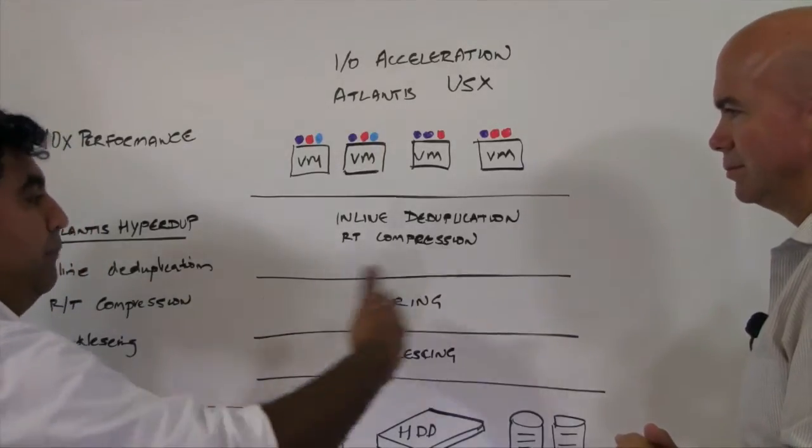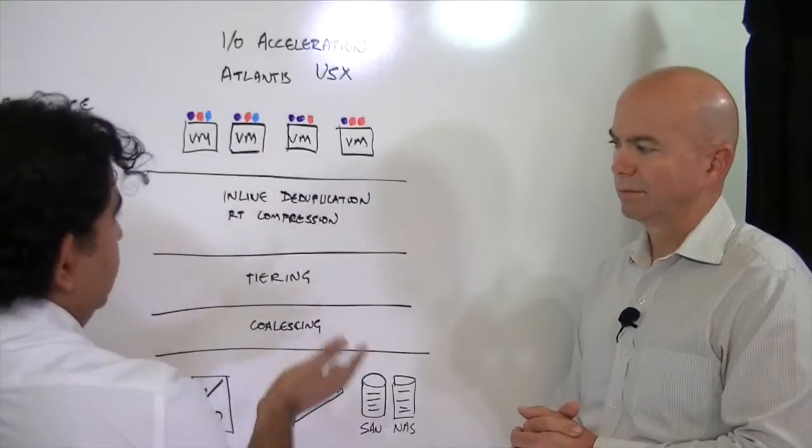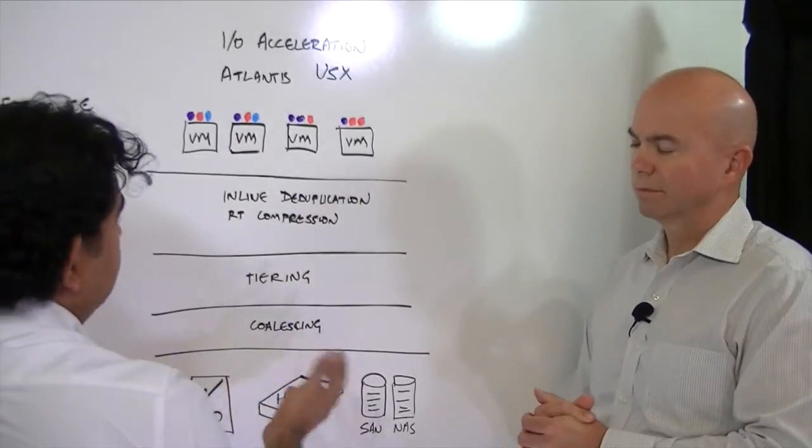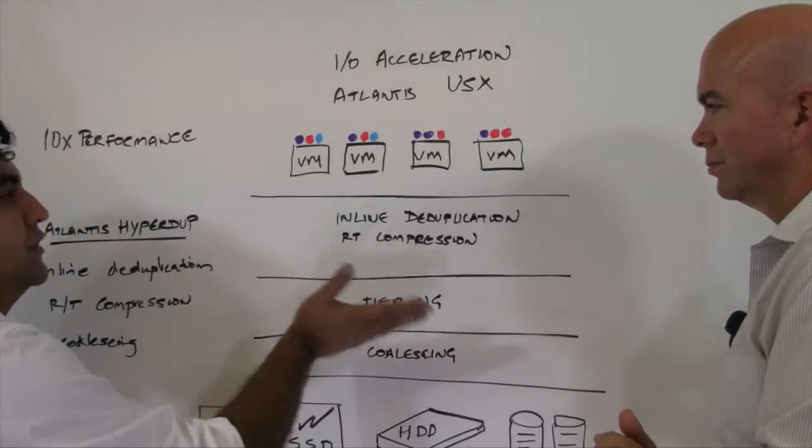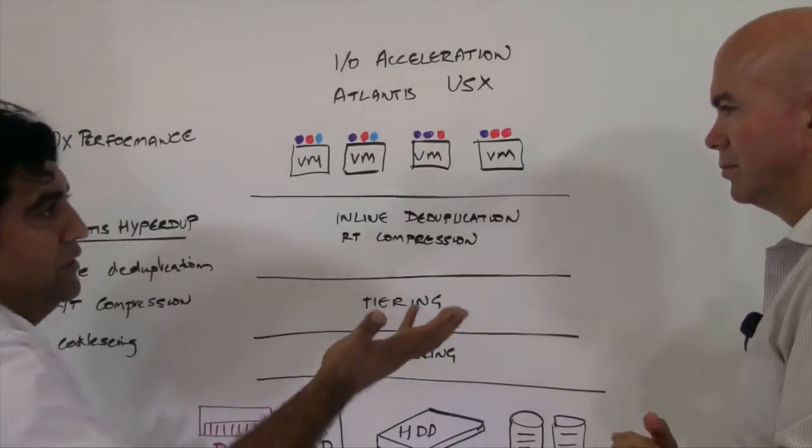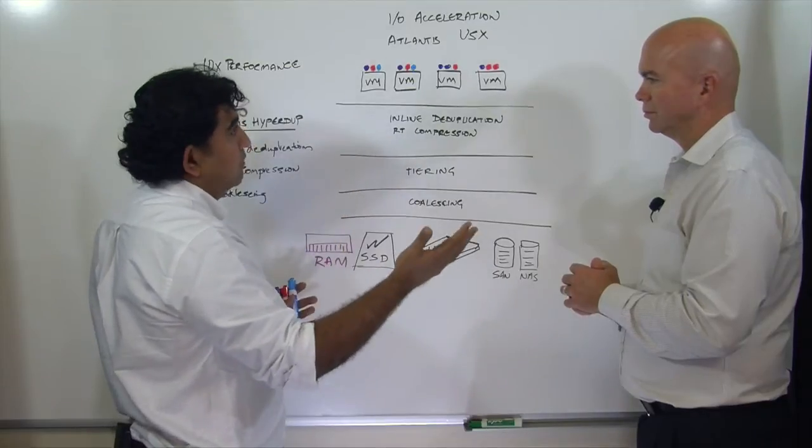What we have is the ability to amplify the tier through deduplication and compression and then change the policies around how data moves between the tiers in such a way that practically 90% to 95% of all IO requests always get serviced from this tier. Lower latency is the biggest impact. Latencies that are between 800 microseconds to a millisecond in general.